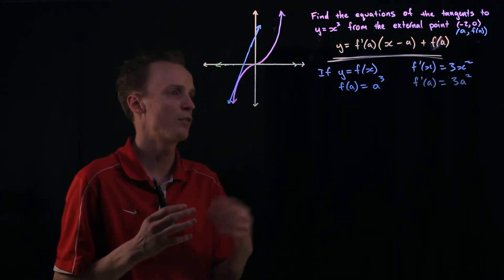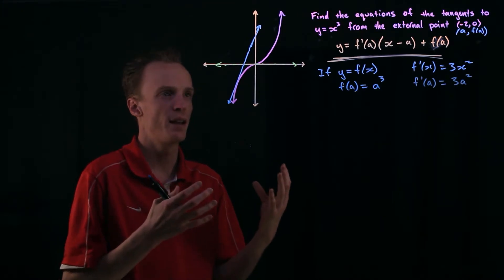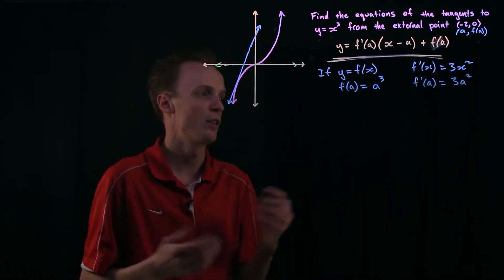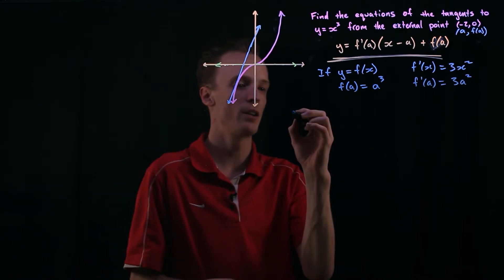So I can now really describe all these linear lines that I can draw here in terms of a. So I can rewrite this to say that the equations of the tangent